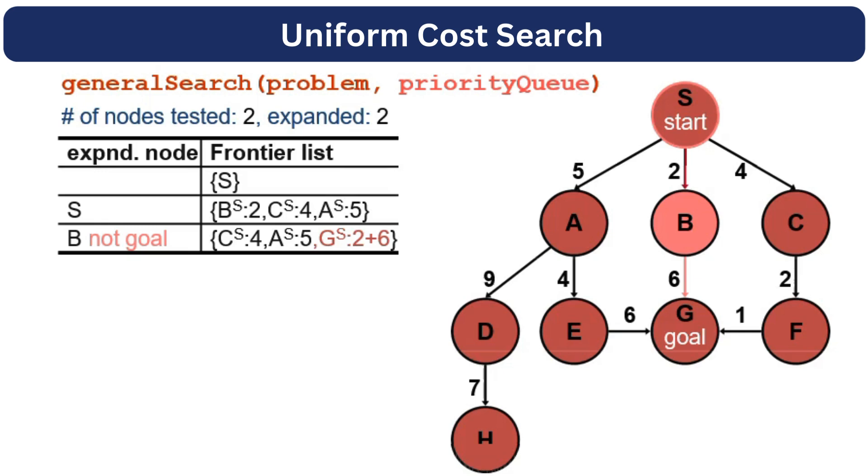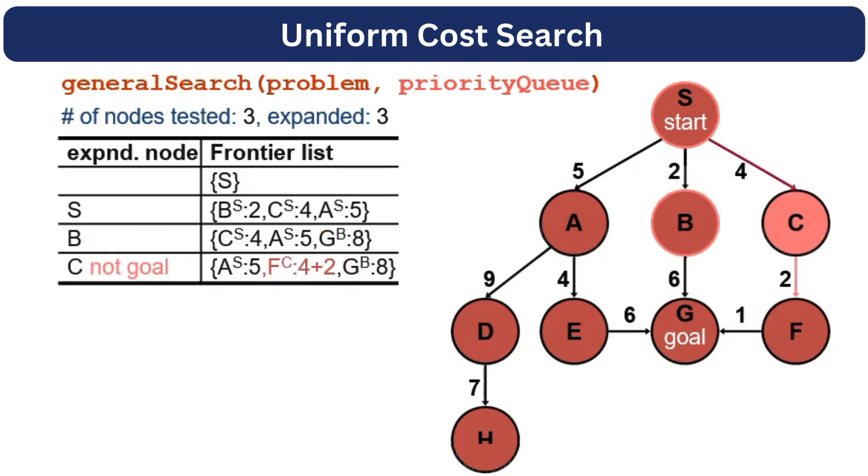The next node with the least cost is C with the cost of 4. So we will dequeue this node. We will check if it is a goal node or not. Then we will explore its neighbors. And the cost for F would be the cost from S to C and C to F. So 4 plus 2. So it will be inserted in the correct position in the priority queue after A. A is with cost 5, F is with cost 6 and G is with cost 8.